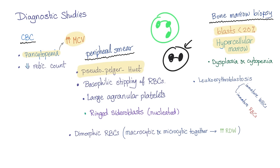Large agranular platelets — large because they are immature, agranular because the bone marrow cannot produce normal platelets with granules. A platelet without granules is useless. Ringed sideroblasts — don't forget, ringed sideroblasts are nucleated and have iron around the nucleus. Dimorphic red blood cells: some are macrocytic, some are microcytic, so the RDW will be high.